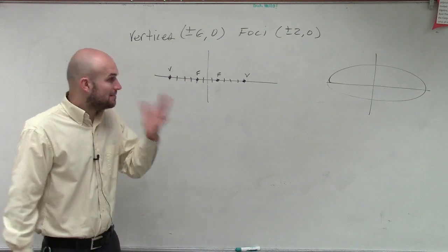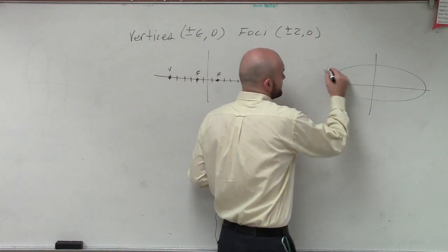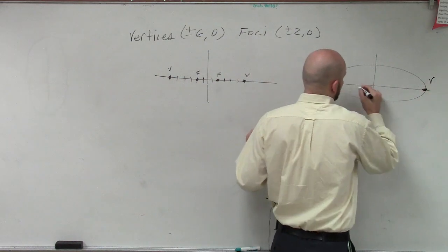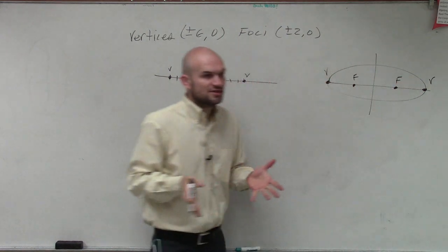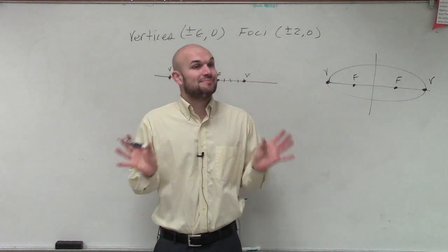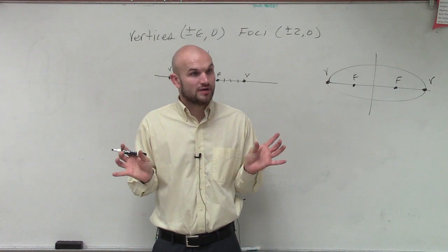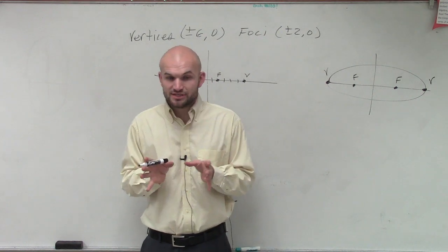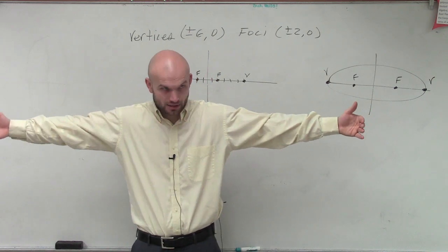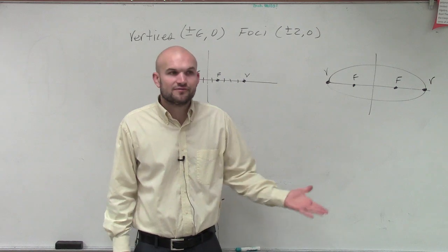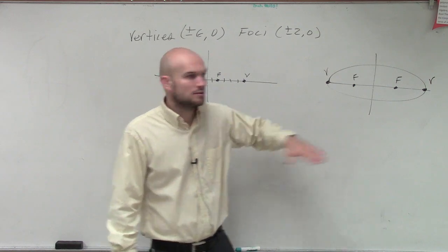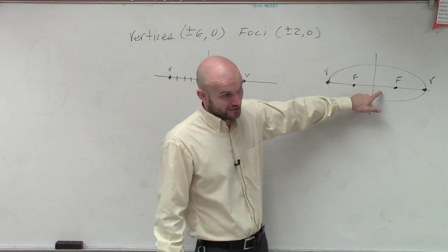Alright. Now, remember, when we're looking at this, if I give you the vertices and the foci, remember the vertices and the foci are plus or minus the same distance from your center, right? If I say your vertices is six units to the right, then it was also six units to the left, correct? So, therefore, what is going to be our center? Because we need to figure out what the center is. It's always zero, zero. In this case, the center is zero, zero.